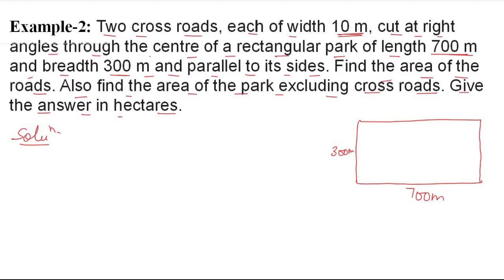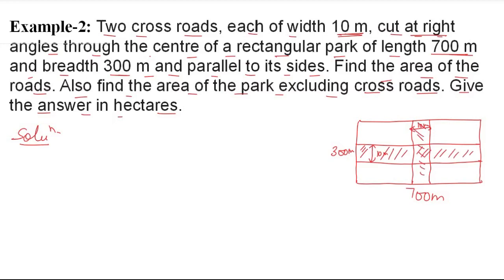There is a rectangular park with length 700 meters and width 300 meters. Two crossroads are made at right angles — one parallel to the width and one parallel to the length — each of width 10 meters. We need to find the area of the roads and the area of the park excluding the crossroads, converting the answer to hectares, using the unit conversion already taught.